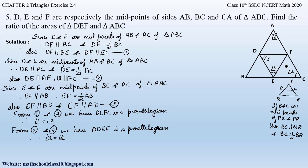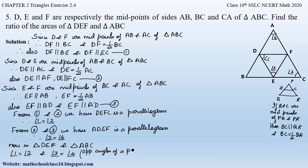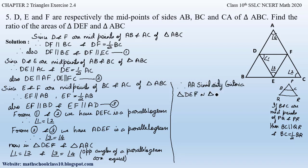Now, considering triangle DEF and triangle ABC, we have two pairs of equal angles: angle 1 of triangle DEF equals angle 2 of triangle ABC, and angle 3 of triangle DEF equals angle 4 of triangle ABC — because opposite angles of a parallelogram are equal. Therefore, by AA similarity, triangle DEF is similar to triangle ABC. We have now proved these two triangles are similar.